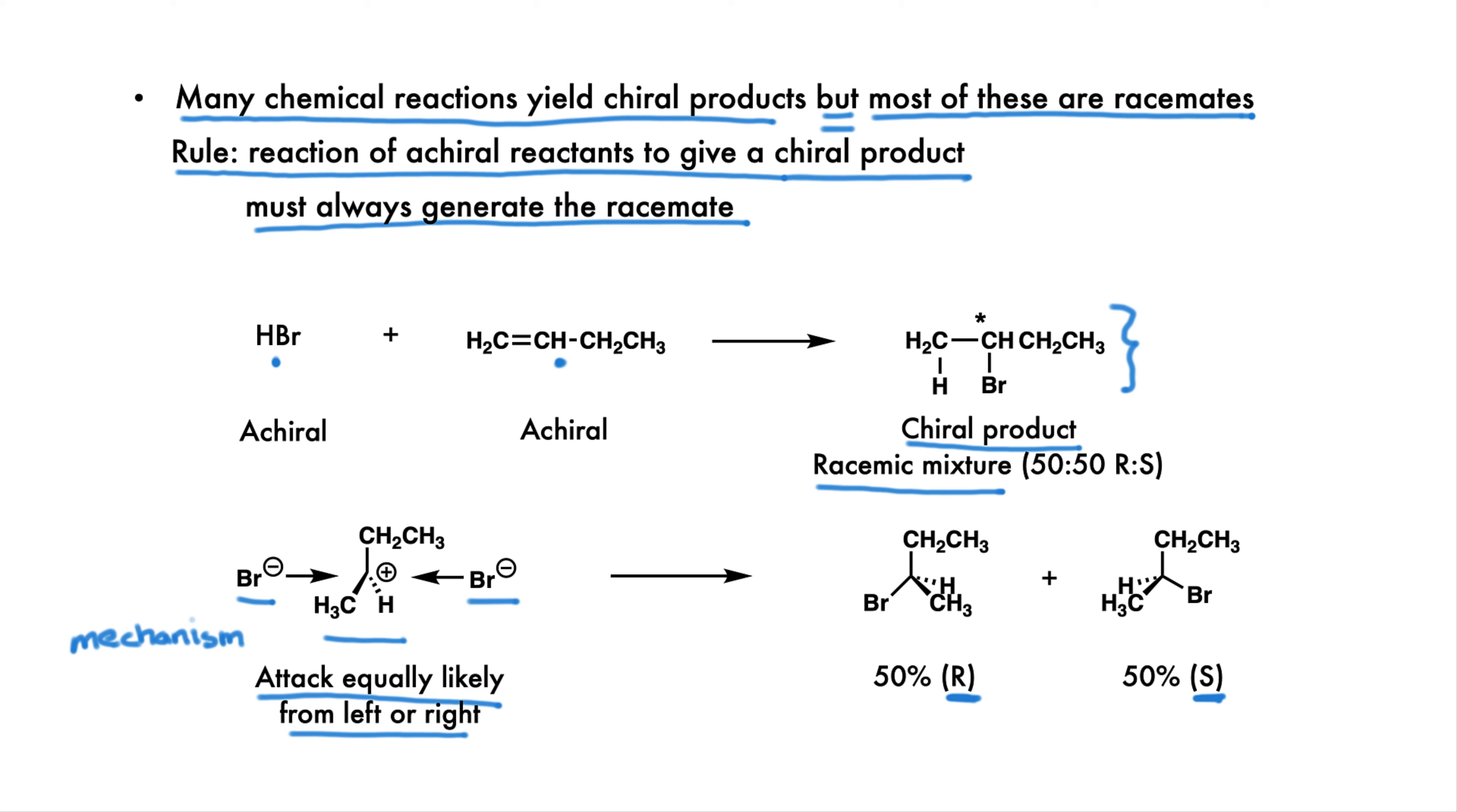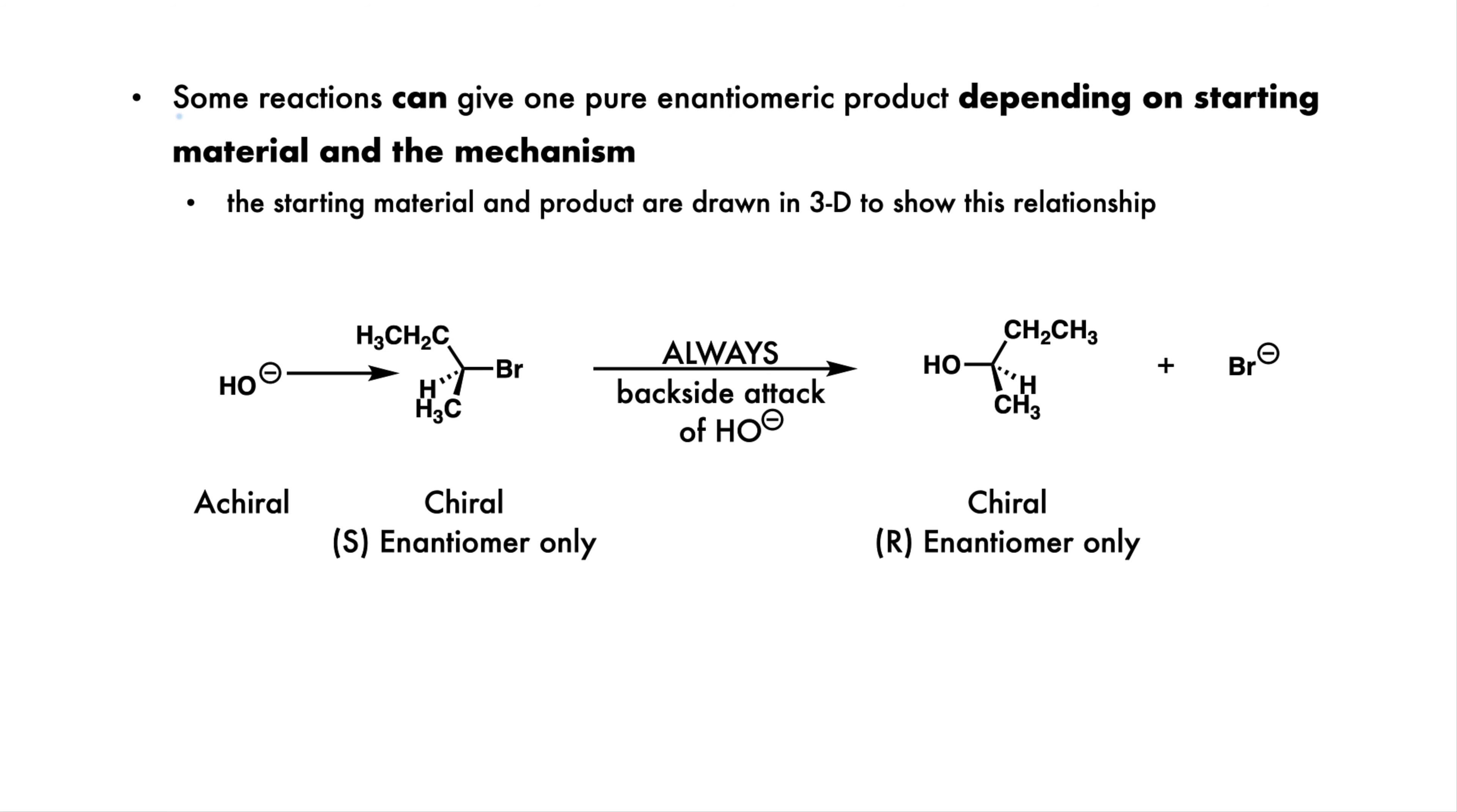Here, both HBr and butene are achiral, so they must yield the racemate. There are other reactions which can produce one enantiomeric product, but it depends on the starting material and the mechanism of the reaction.